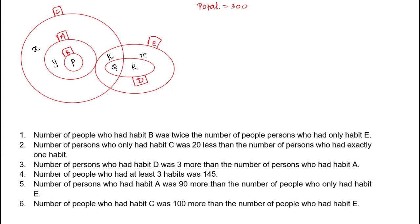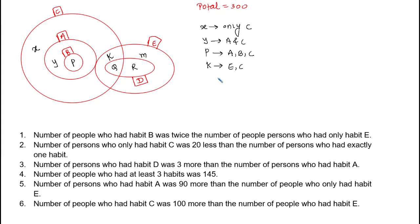Let's interpret what each variable represents: x = only habit C; y = habits A and C; p = habits A, B, and C; k = habits E and C; q = habits D, E, and C; r = habits D and E; m = only habit E.